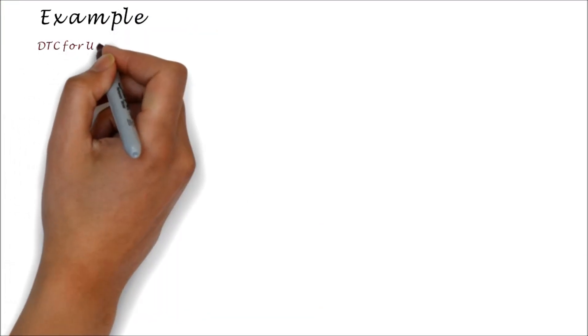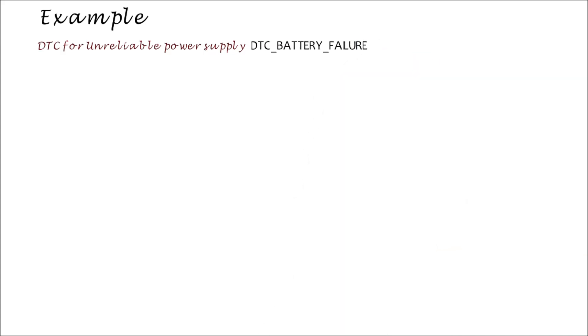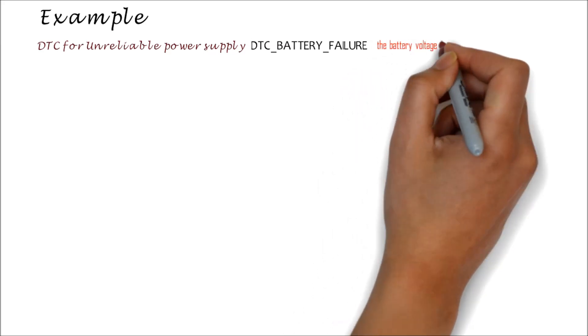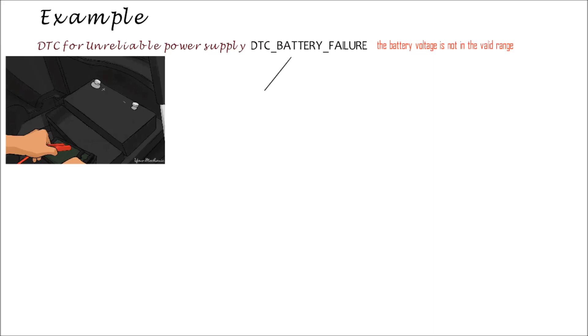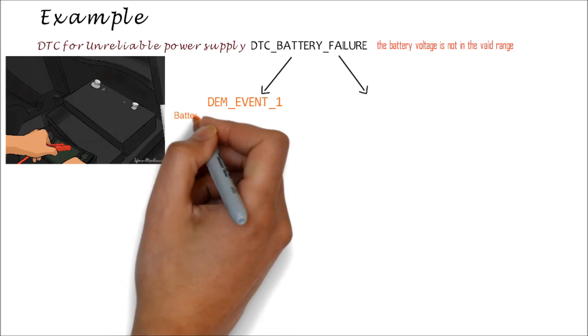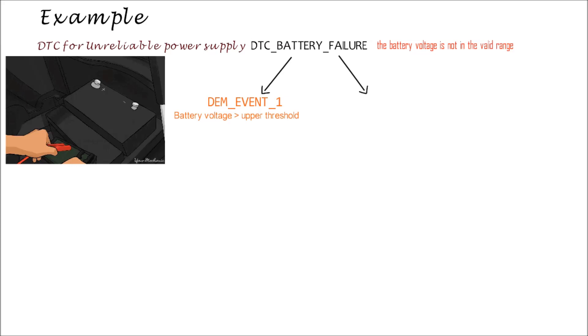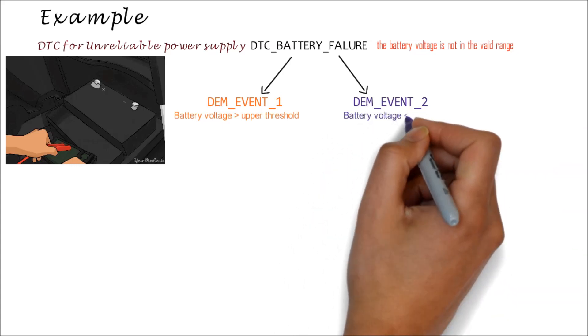Let me take an example. Let us say there is a DTC for unreliable power supply — call it DTC_battery_failure. If this DTC is set, the technician understands that the battery voltage is not in the valid range, can check the battery, diagnose the issue, and fix it. For this DTC, we can have two possible DEM events, since DEM events are atomic. DEM event 1: battery voltage is more than the upper threshold. DEM event 2: battery voltage is less than the lower threshold.